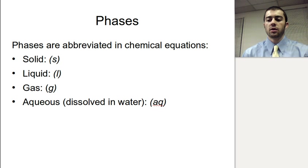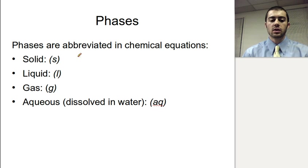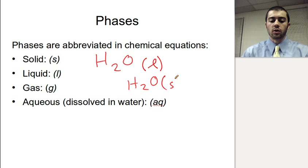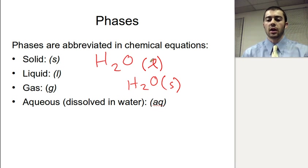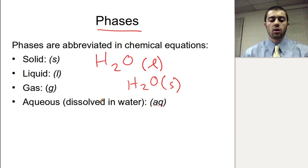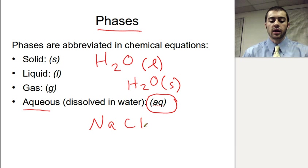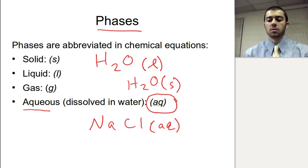Another thing to know — and definitely memorize — is the phase notation. The indication of the phases: a solid is (s) in parentheses, a liquid is (l), a gas is (g). These parentheses just indicate what phase the compound is in — so we could have solid water, liquid water, or gaseous water. And then for another substance we could have aqueous, which means dissolved in water, and the symbol for that is (aq). So if we have NaCl(aq), that means we have sodium chloride dissolved in water. You definitely need to know all of these symbols for the various phases.